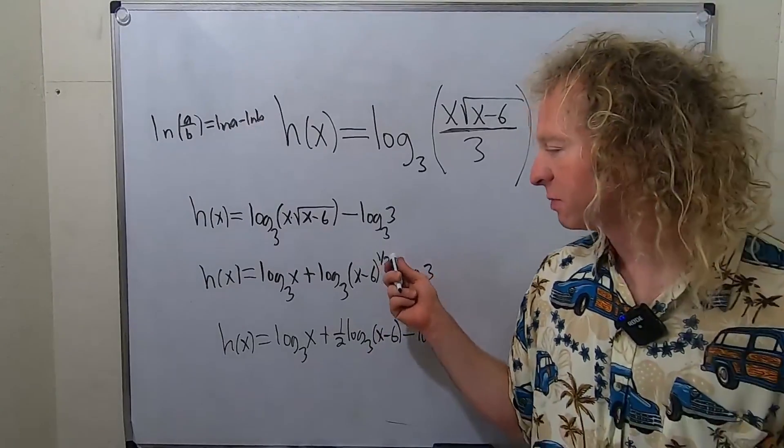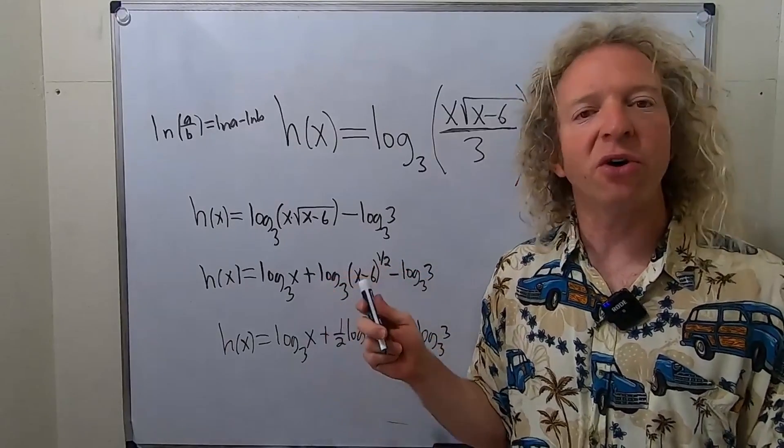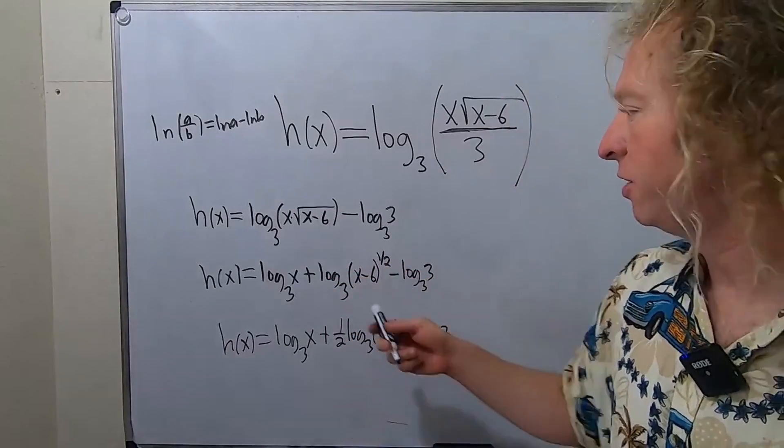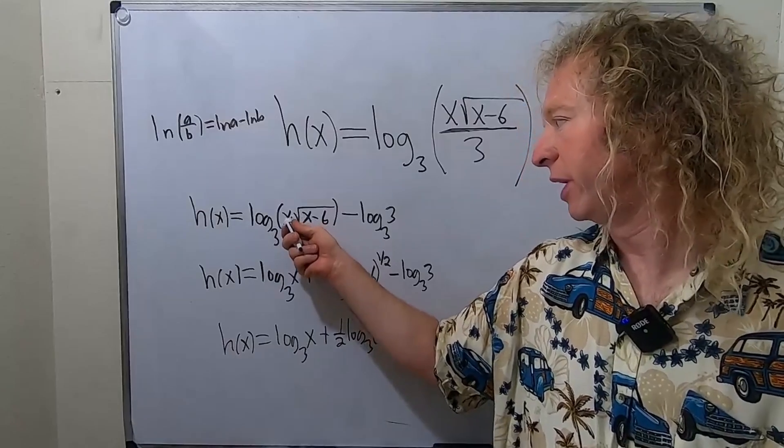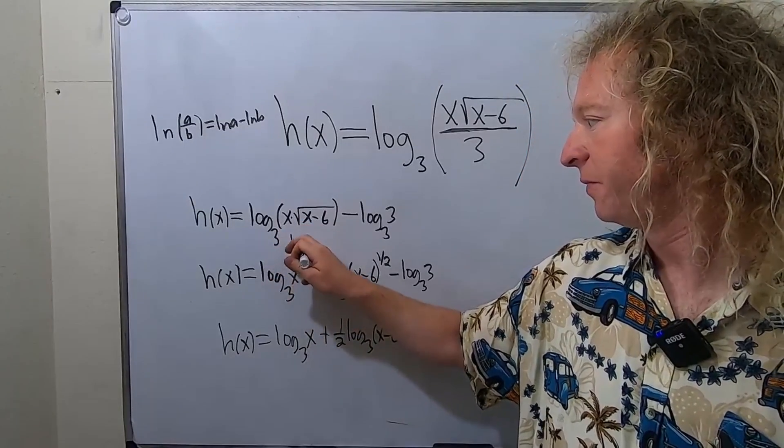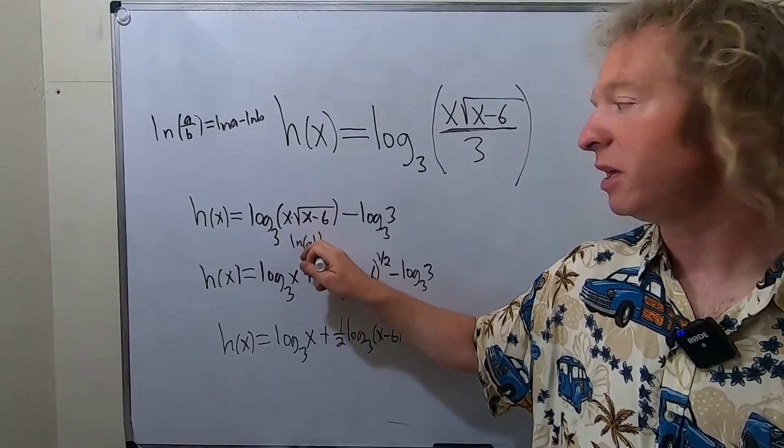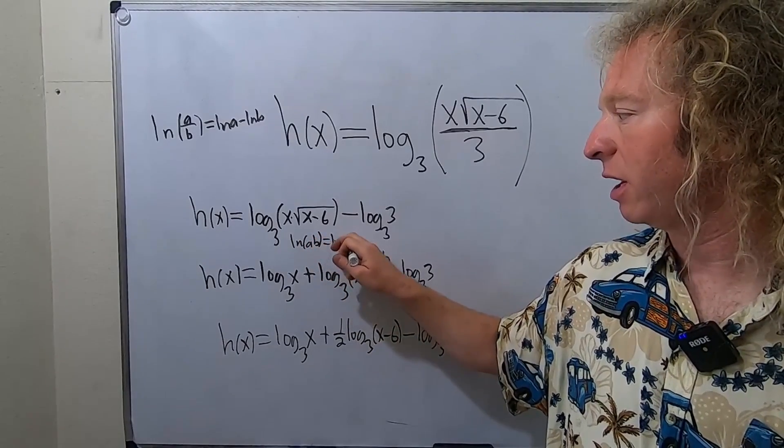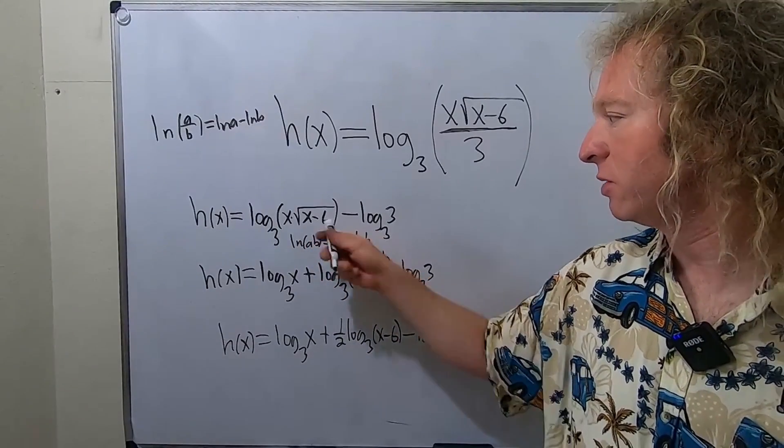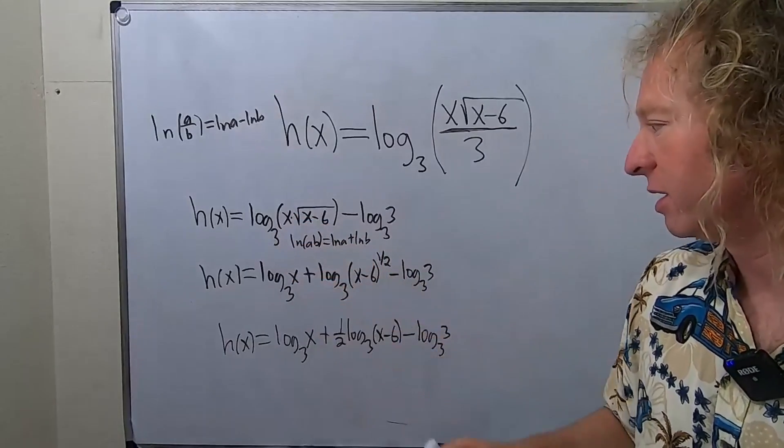So remember, whenever you have an exponent here, you can put it in the front. That's called the power rule. And here we use what's called the product rule. If you have the natural log of a times b, that's the natural log of a plus the natural log of b. That's what we use to go from here to here. The times became a plus.